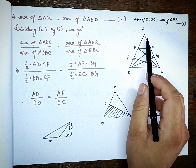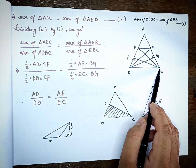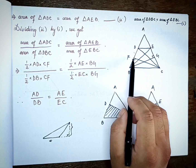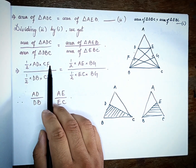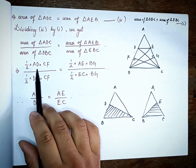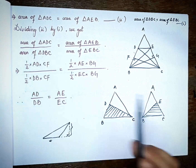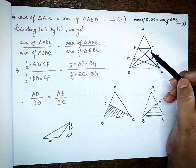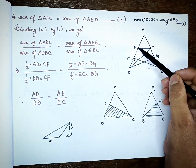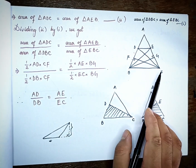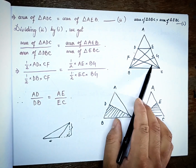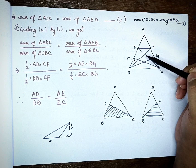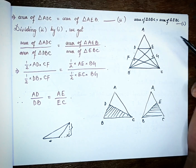Triangle ADC: the perpendicular is CF, so area equals half times AD times CF. Triangle DBC: base is DB, altitude is CF. So area of DBC equals half times DB times CF.